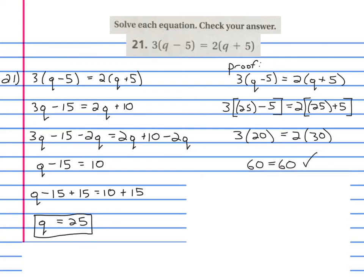And what is 3 times 20? It is 60. What is 2 times 30? It is 60. So 60 equals 60. That's a proper proof.